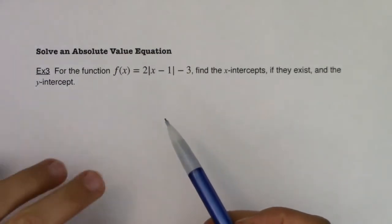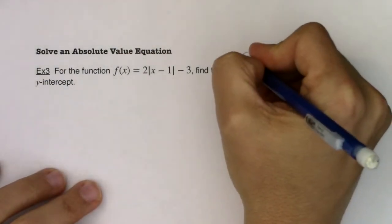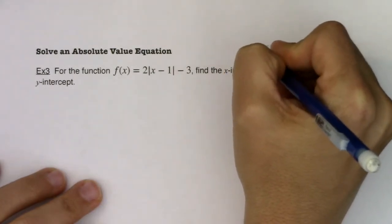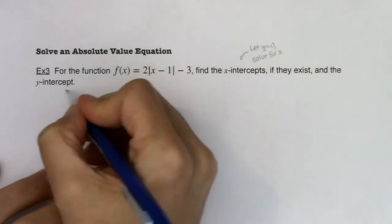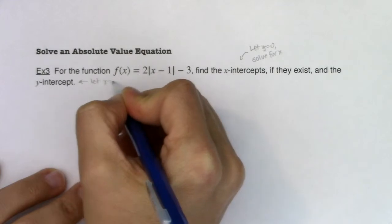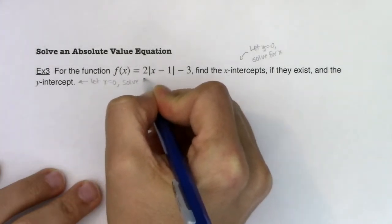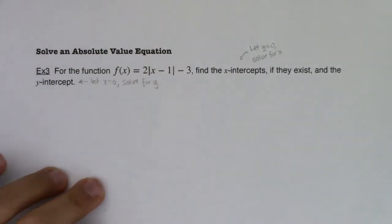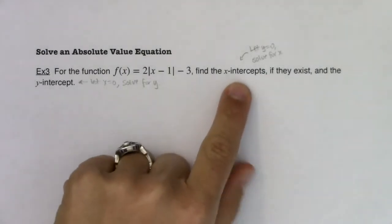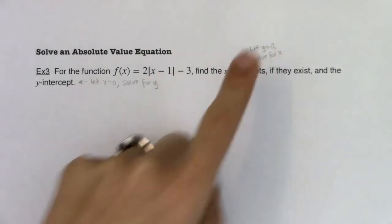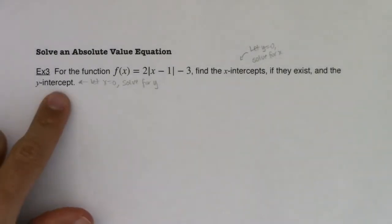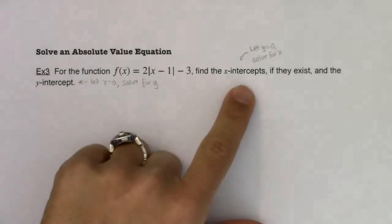If you remember from back in chapter 2, anytime you want to find an x-intercept, you let y equal 0 and solve for x. If you ever want to find a y-intercept, you would let x equal 0 and solve for y. I always remembered it as letting the opposite letter zero out. So if I wanted to find an x-intercept, let y zero out; if I wanted to find a y-intercept, let x zero out. Typically it's easier to find the y-intercept than the x-intercepts.